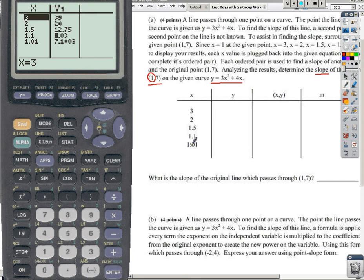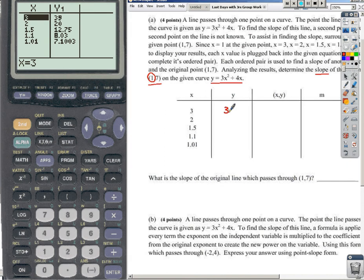So as you can see, I've already done that. And when you plug in those values, we get our corresponding y values back. So when x is 3, y is 39. When x is 2, y is 20. And so on down the line here. 1.5 goes with 12.75. 1.1 goes with 8.03. 1.01 goes with 7.1003.